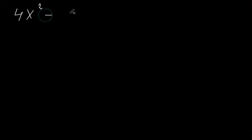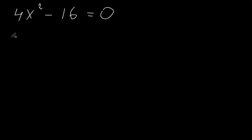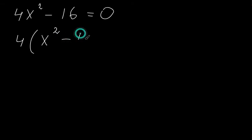Let's say we have 4 times (x² minus 16) equals zero. We need to take the number 4 before our parentheses — not x, because there is only one x in this example. So we get 4 times (x² minus 4). You can verify this as in the previous example.